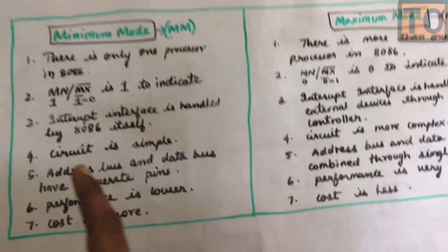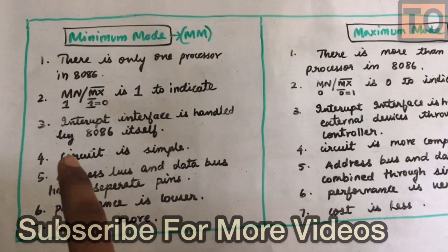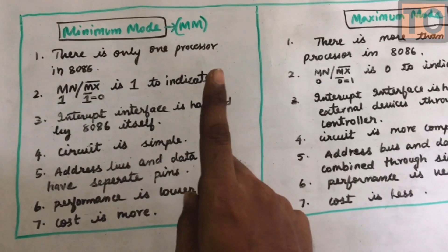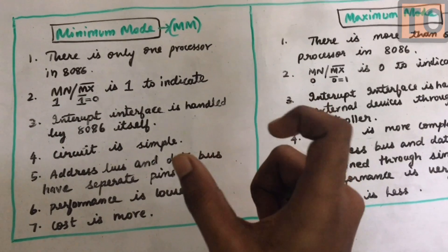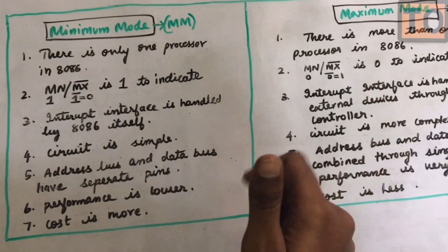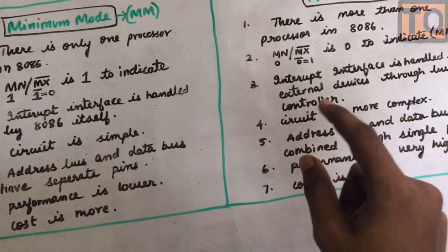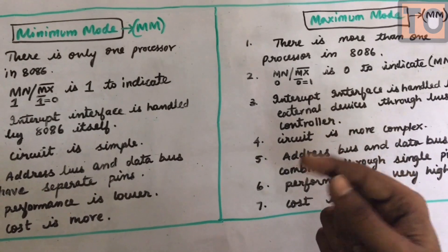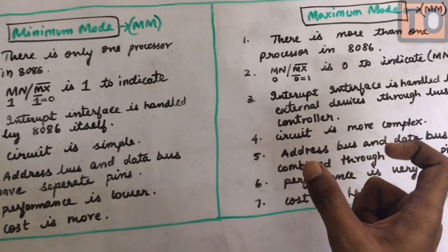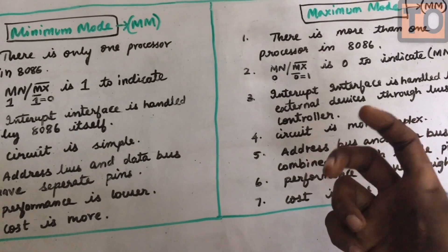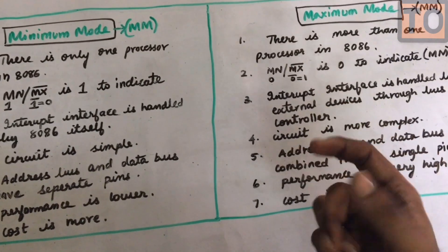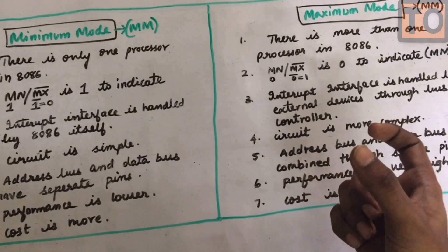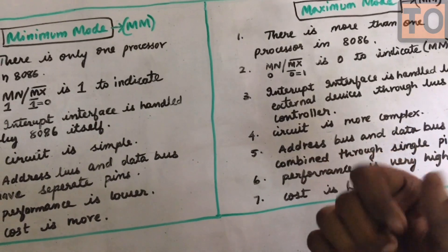The third point: if you have a simple circuit, you only need one processor. But if a circuit is more complex, it is more complex and you may need to use two processors.